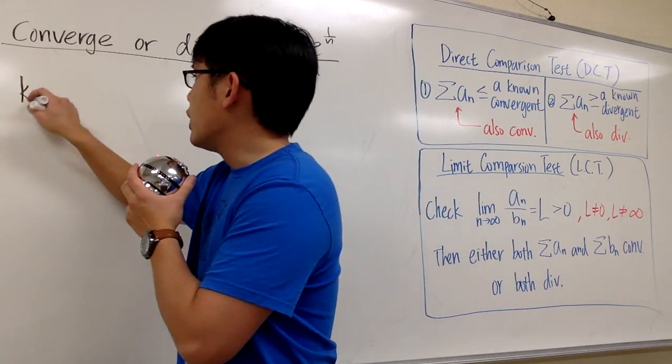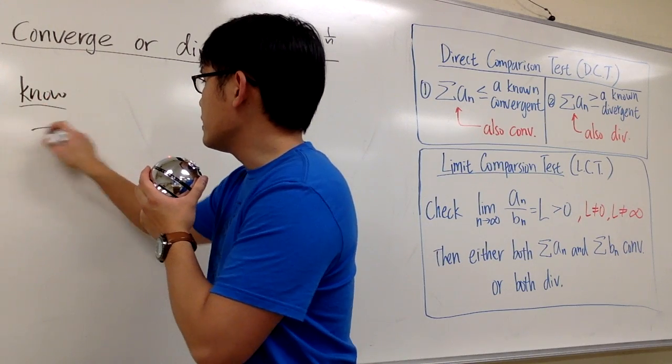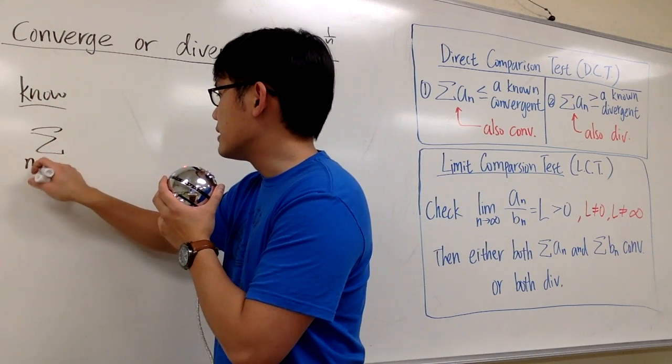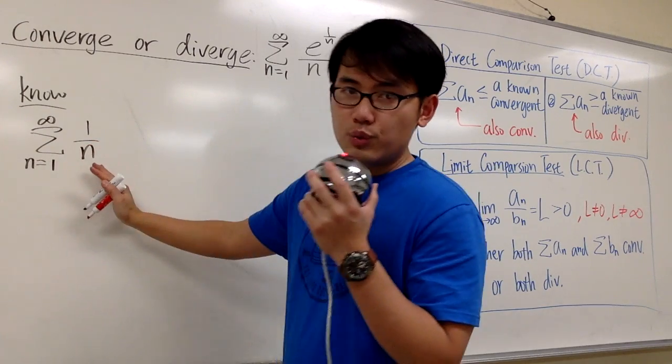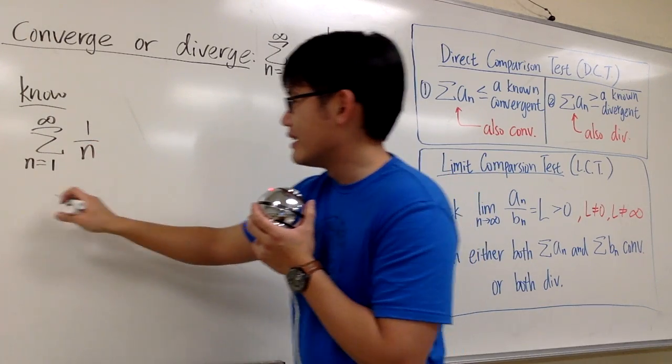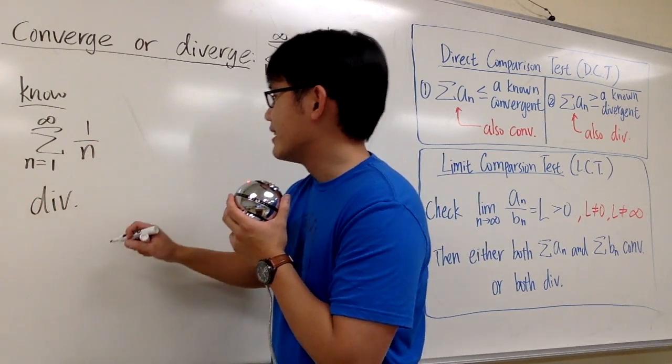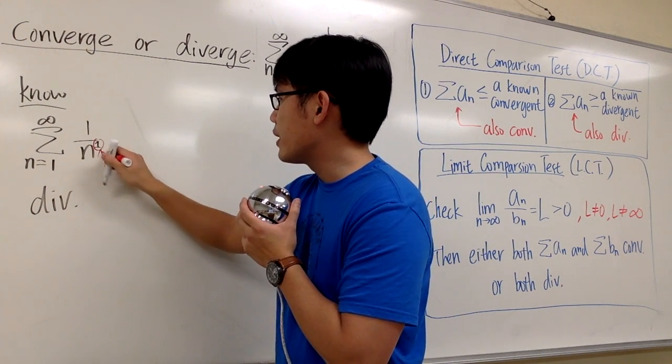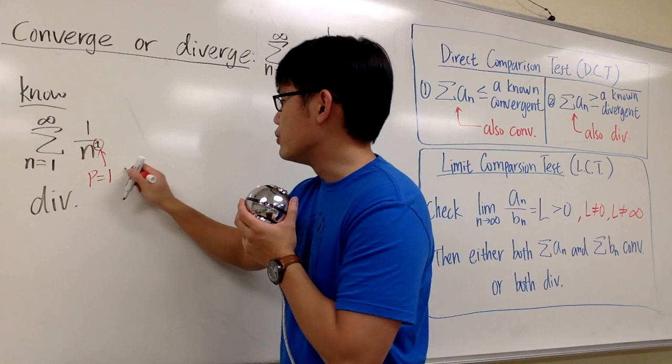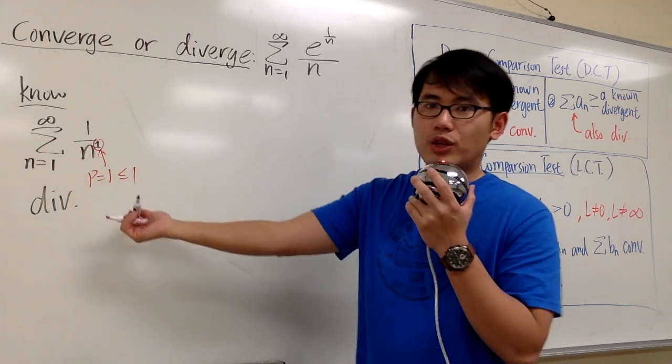Let me write down: we know that the harmonic series, sigma as n goes from 1 to infinity, 1 over n, diverges. You can say this is like n to the first power, where p is 1, which equals 1. That's one of the p-series.